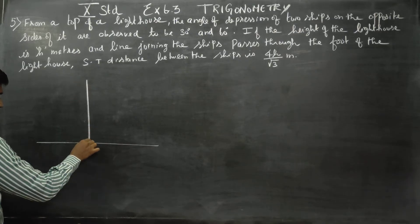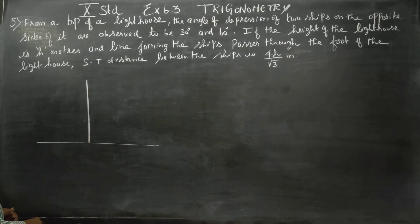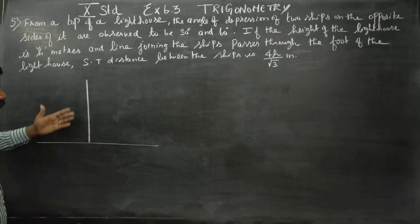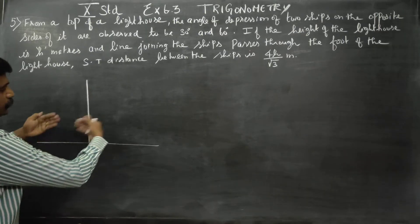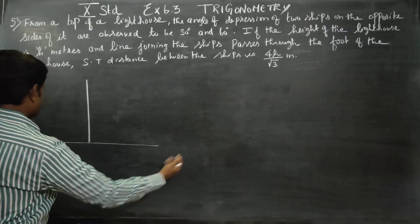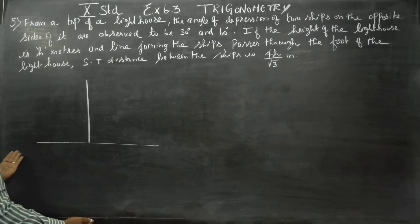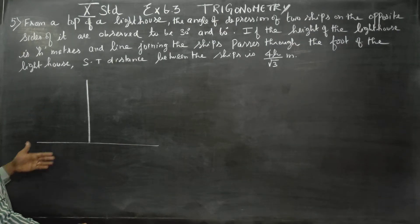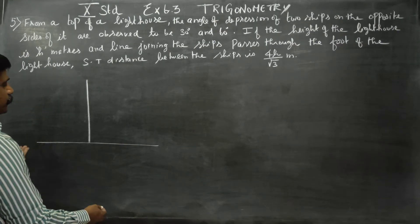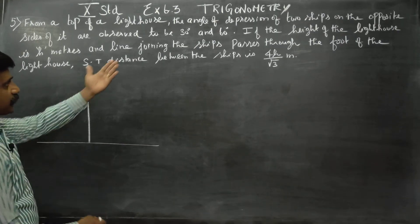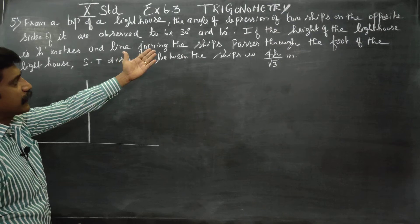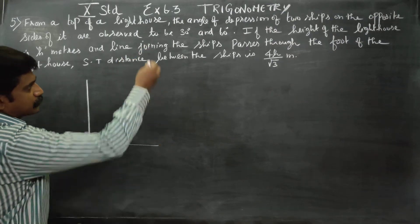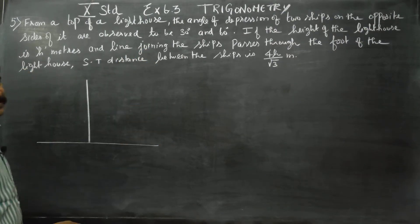The lighthouse has two sides — you can see the board on the back side. There is a ship on one side with a 30 degree angle of depression, and another ship with a 60 degree angle of depression.